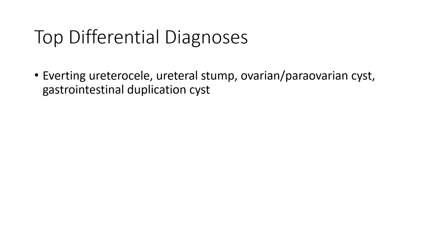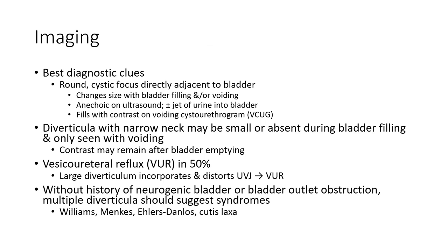Top differential diagnoses include: ureterocele, ureteral stump, ovarian or paraovarian cysts, and gastrointestinal duplication cysts. Best diagnostic clues: a round cystic focus directly adjacent to the bladder that changes size with bladder filling and/or voiding, appearing anechoic on ultrasound, with minor change of urine into the bladder.